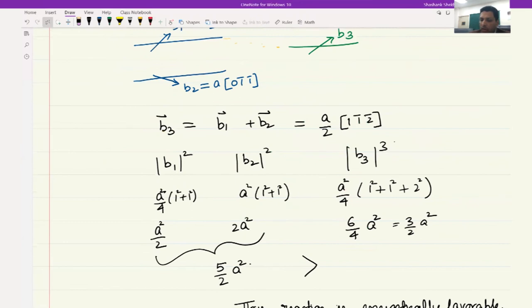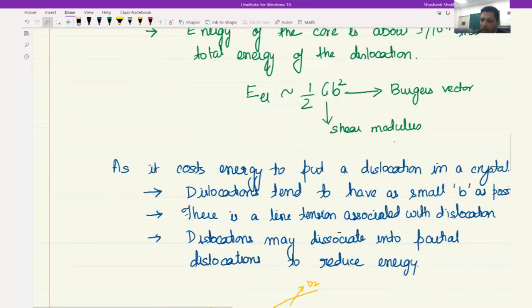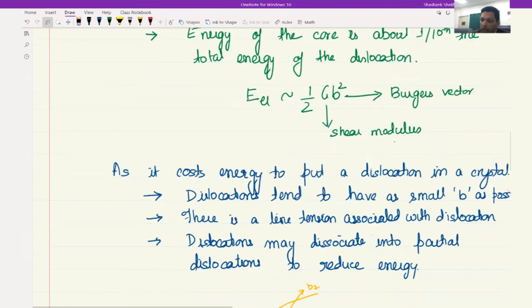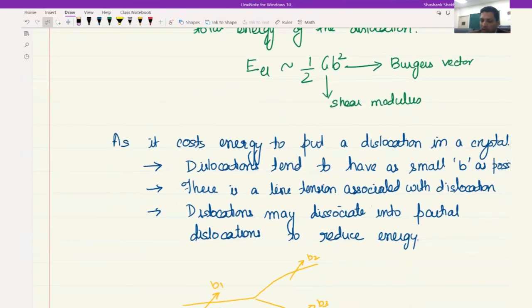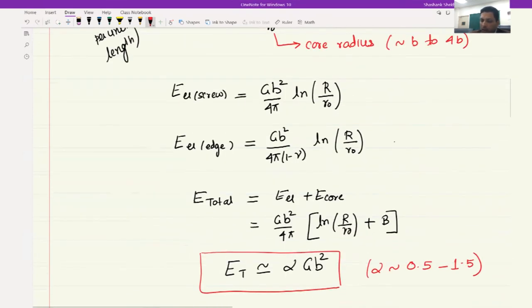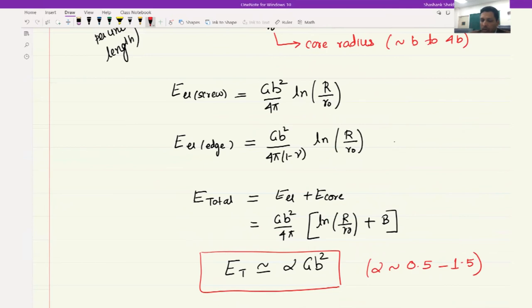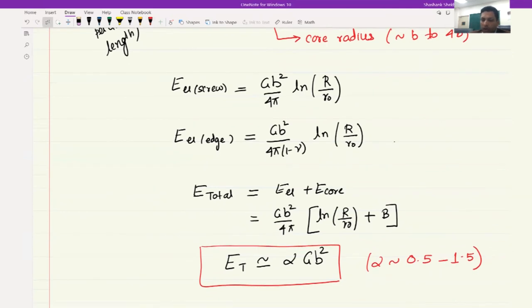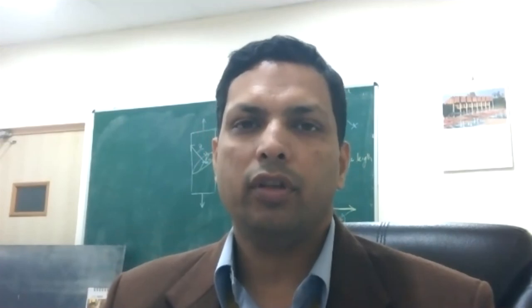This gives us the relation for the energy of a mixed dislocation. We have also seen how to compare dislocation energies to determine whether a reaction would be favorable. Another important concept is that there is always a line tension associated with the dislocation, comprising the elastic and core energy components. That brings us to the end of this lecture segment, and in the next topic we will explore dislocation motion.